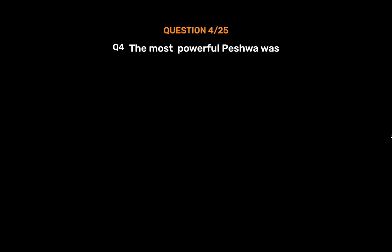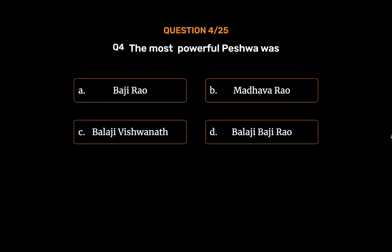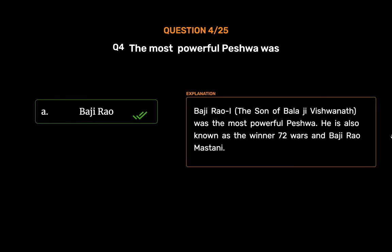Question No. 4: The most powerful Peshwa was — Option A: Baji Rao, Option B: Madhava Rao, Option C: Balaji Vishwanath, Option D: Balaji Baji Rao. The correct answer is Option A, Baji Rao. Baji Rao I, the son of Balaji Vishwanath, was the most powerful Peshwa. He is also known as the winner of 72 wars and Baji Rao Mastani.